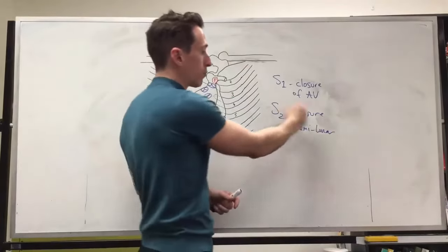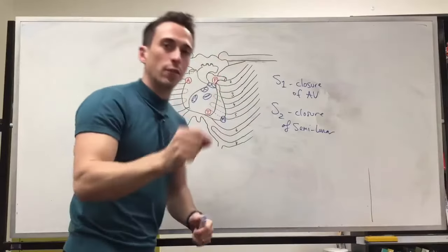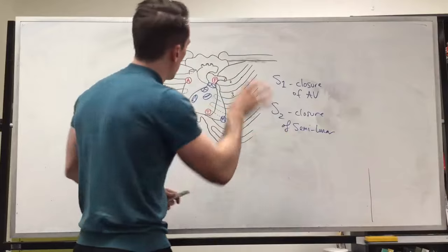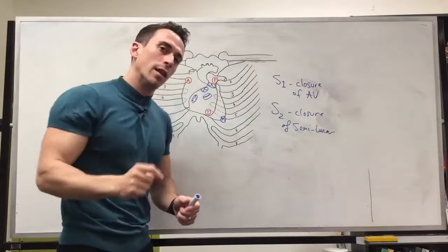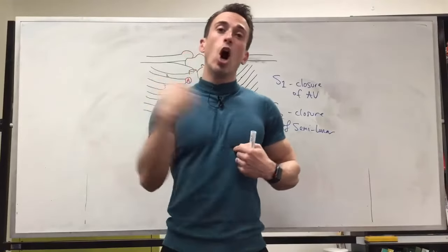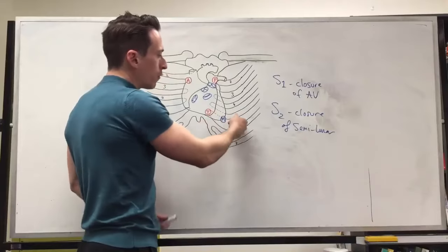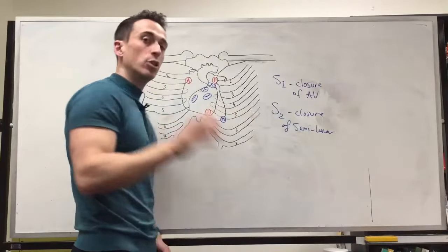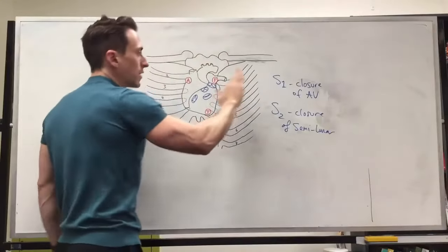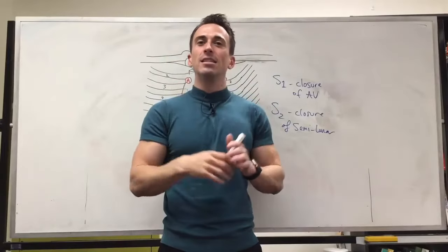Because the valves sit behind the sternum, it's difficult to listen to them directly — the sternum muffles the sound — but there are other parts of the chest we can listen from. If you want to listen to the mitral valve, go to the apex of the heart at the fifth intercostal space on the left-hand side. If you want to listen to the tricuspid valve, stay at that fifth intercostal space and move more medially towards the middle. For the semilunar valves: the base of the heart sits at the second rib, so go to the second intercostal space — on the left-hand side to hear the pulmonary valve, and on the right-hand side to hear the aortic valve.